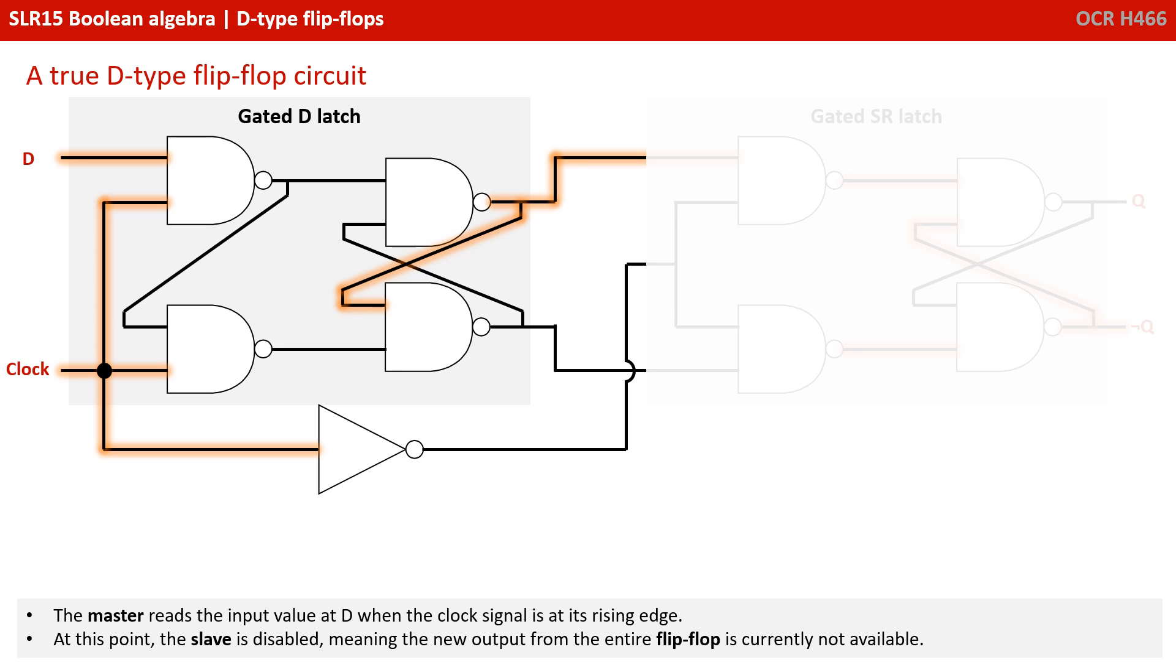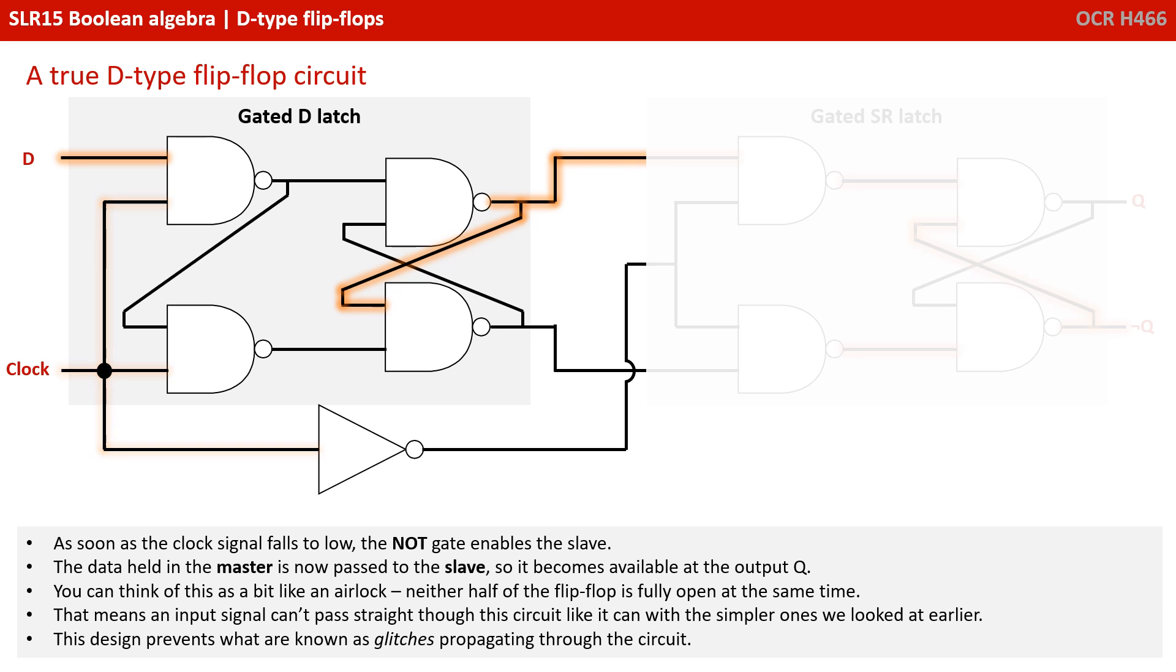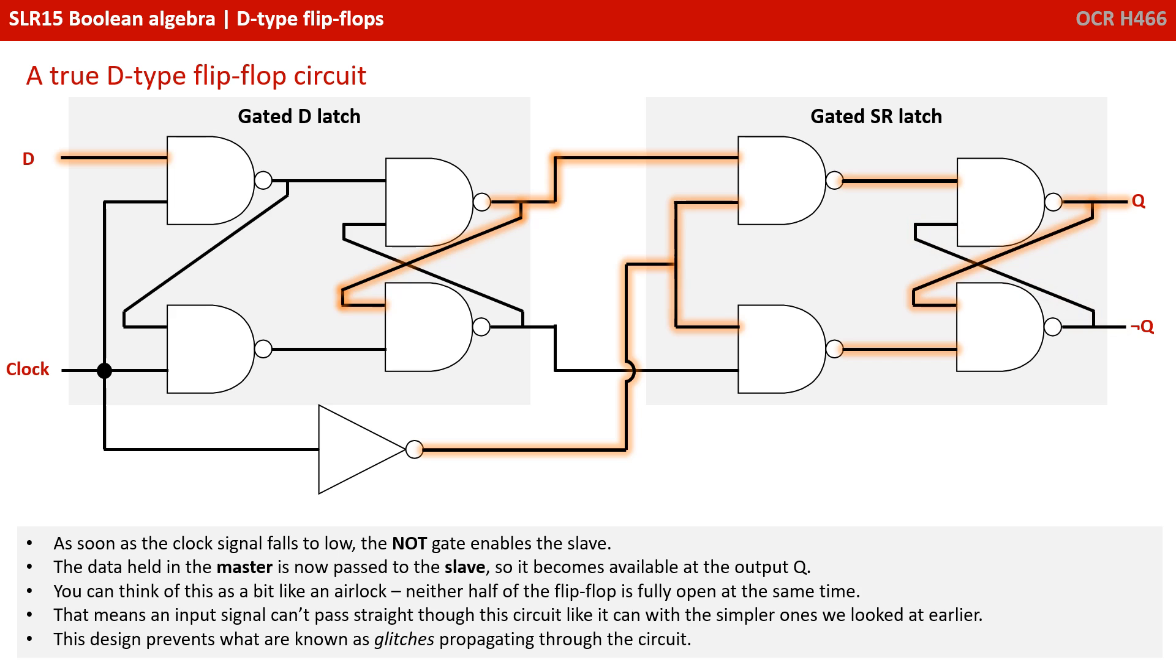The master reads the input value at D when the clock signal is at its rising edge. At this point, the slave is disabled, meaning the new output from the entire flip-flop is currently not available. As soon as the clock signal falls to low, the NOT gate enables the slave. The data held in the master is now passed to the slave, so it becomes available at the output queue. You can think of this a bit like an airlock. Neither half of the flip-flop is fully open at the same time. That means an input signal can't pass straight through this circuit like it can with the simpler ones we looked at earlier. This design prevents what are known in electronics as glitches propagating through the circuit.